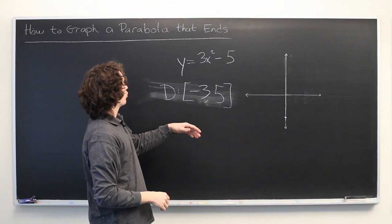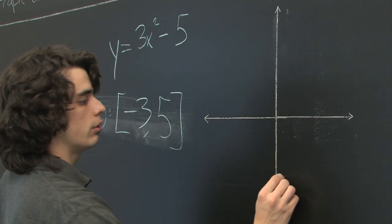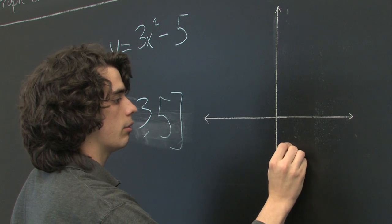Okay. x equals 1. We get 3 minus 5 is negative 2. Somewhere around there.